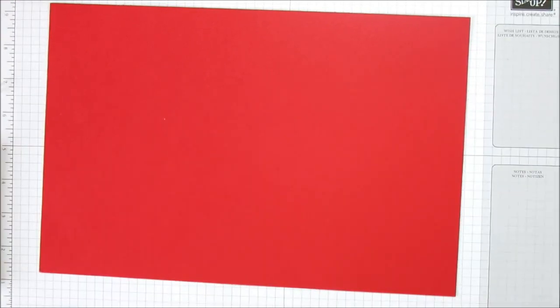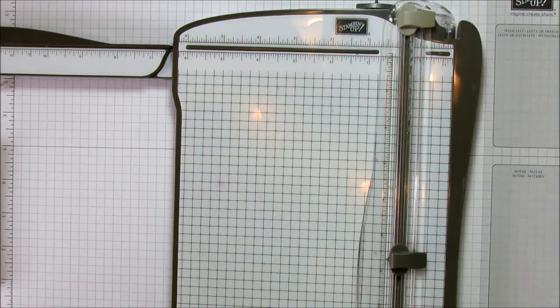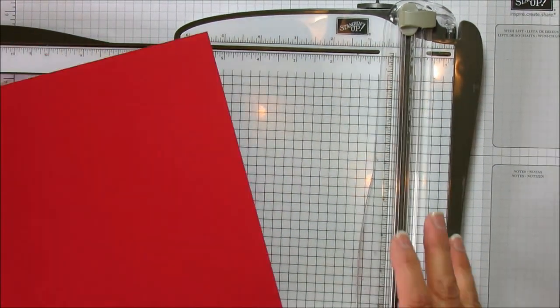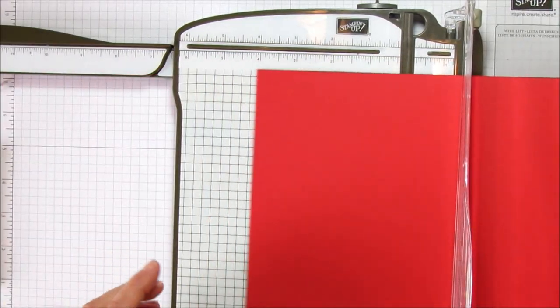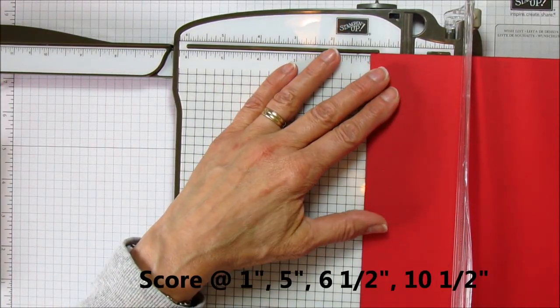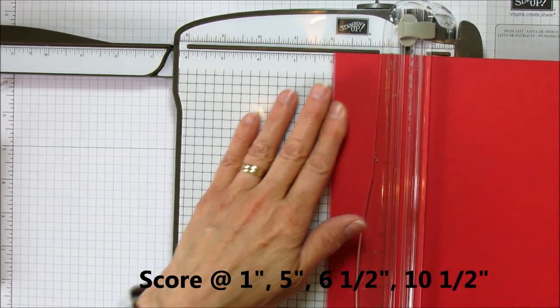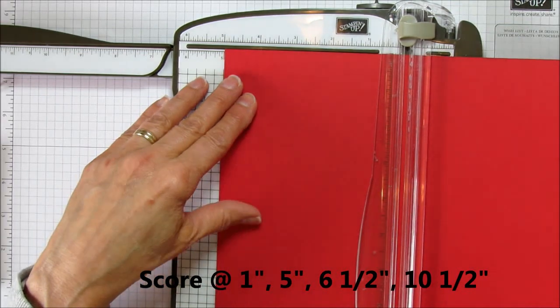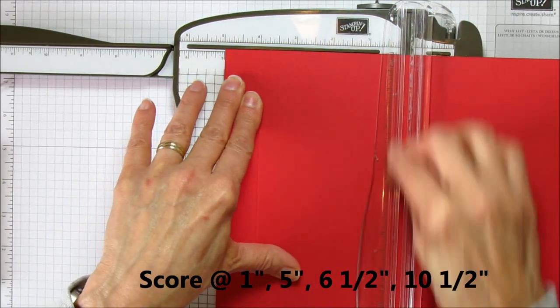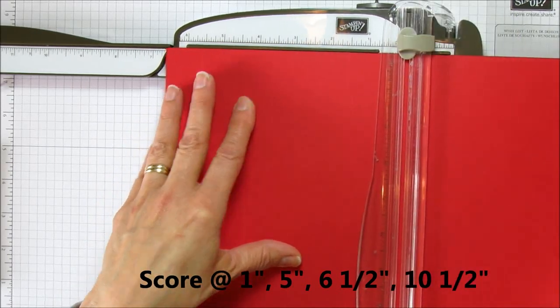Let's get started scoring this. On the 12-inch side we're going to score it at one inch, then five inches, six and a half, and ten and a half.